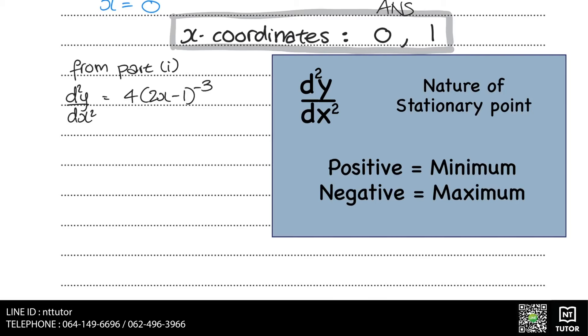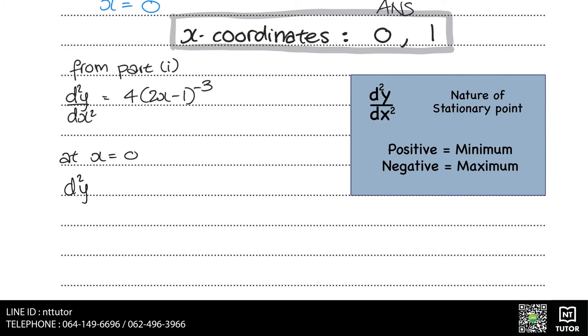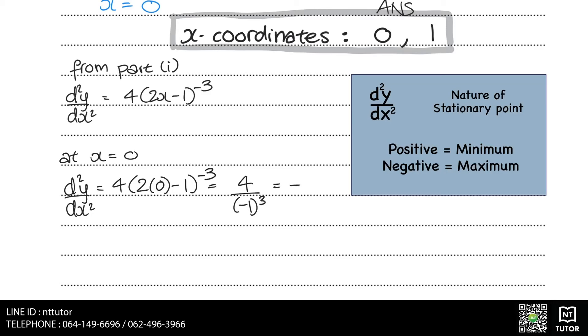To find the nature of the stationary point at x equals 0, we need to substitute x equals 0 into our expression for d squared y over dx squared. It gives us a negative number, which means that this point is a maximum.